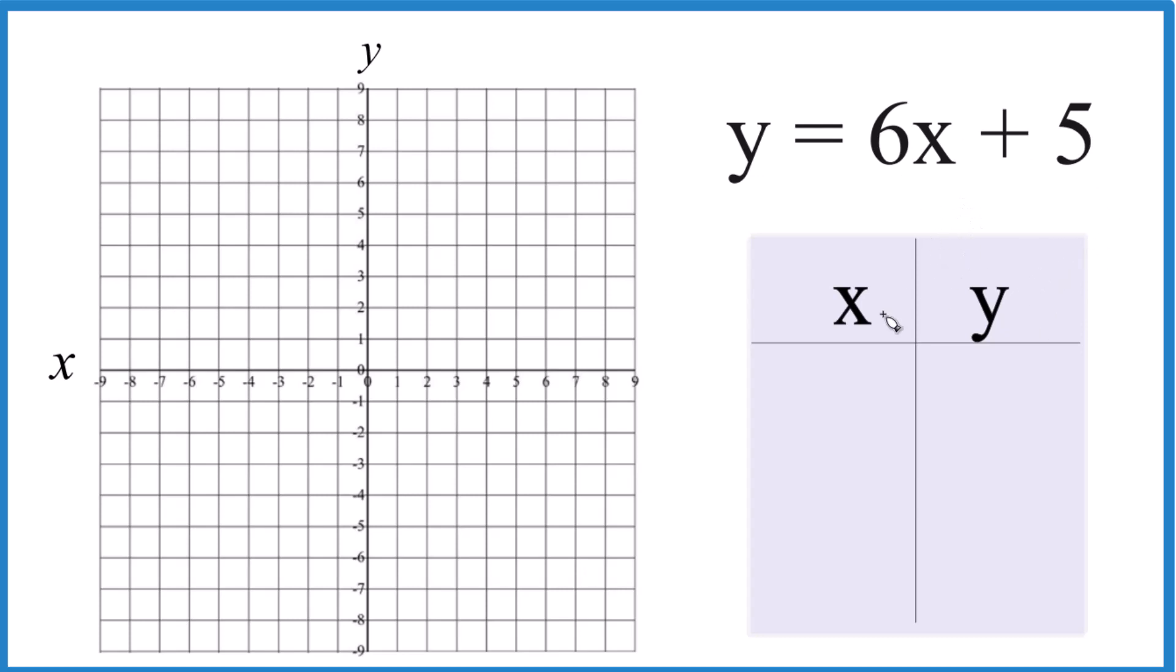So let's put values in for x, and we'll calculate y, plot those, and we'll get the line for y equals 6x plus 5.